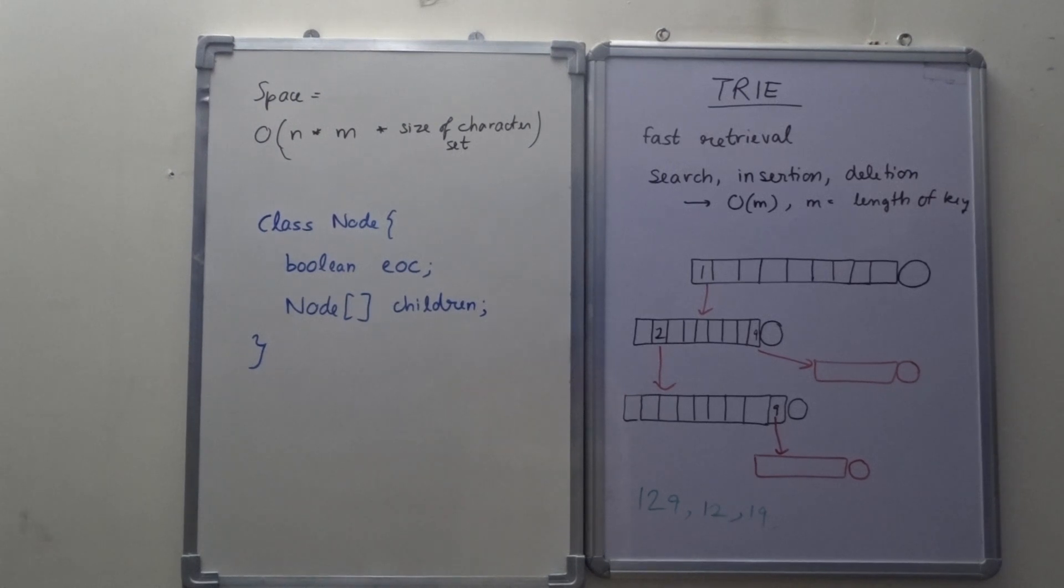Okay, so Trie is a fast retrieval data structure, that is its updation—search, insertion and deletion—occurs in O(m), where m is the length of the key.